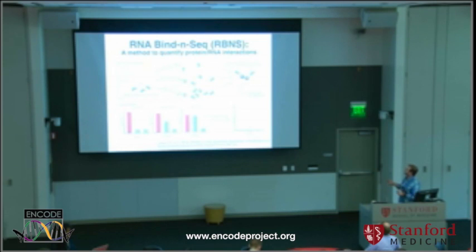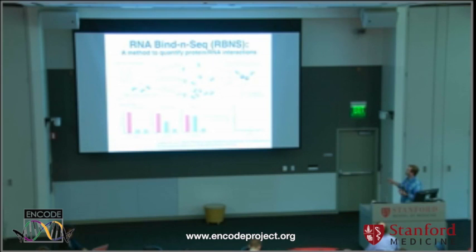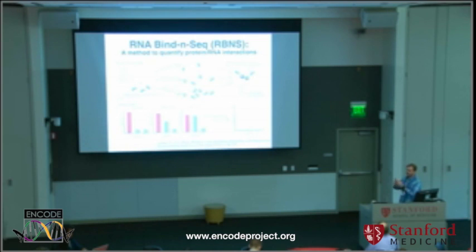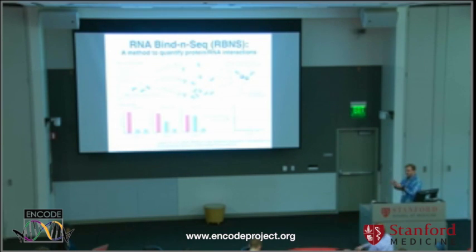Another assay being done in Chris Burge's lab is what we call RNA bind-and-seek. They take a pool of randomized RNAs, incubate it with recombinant proteins at several different concentrations, isolate the bound RNAs, and then sequence them. They also sequence the input RNA, so they can look at the enrichment of different hexamers, sevenmers, eightmers, et cetera — calculating the relative binding affinity of the protein for these — and they can derive the in vitro motifs that these proteins optimally recognize.